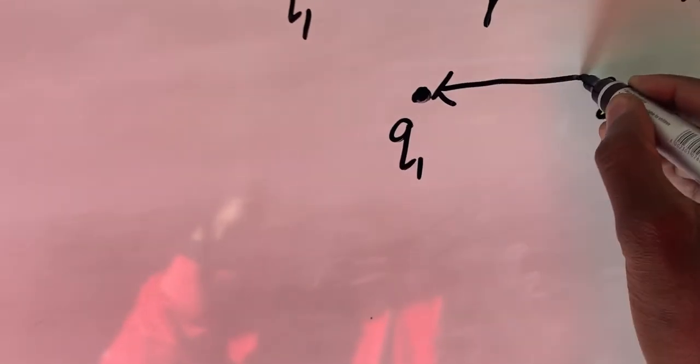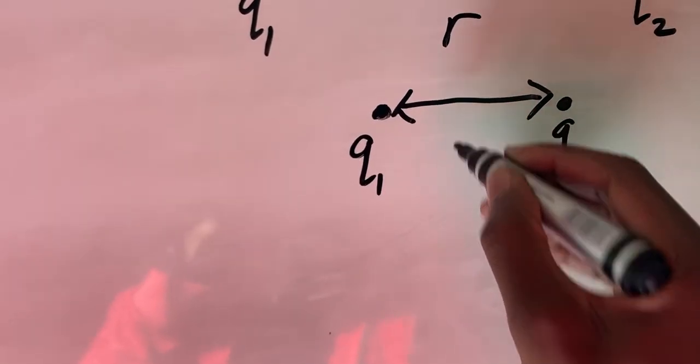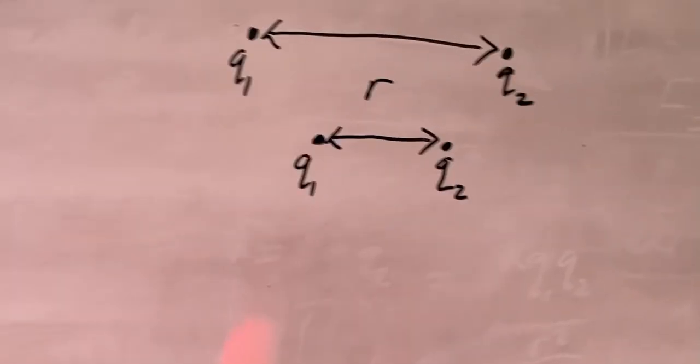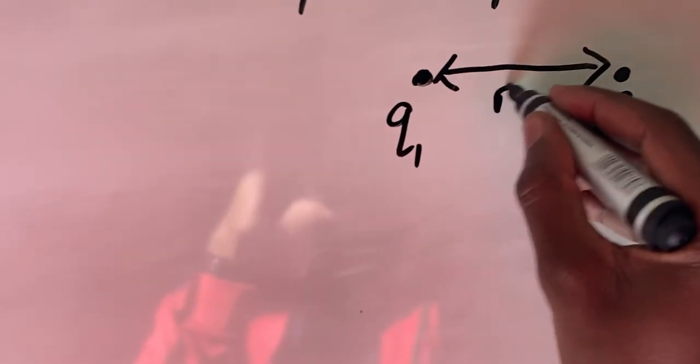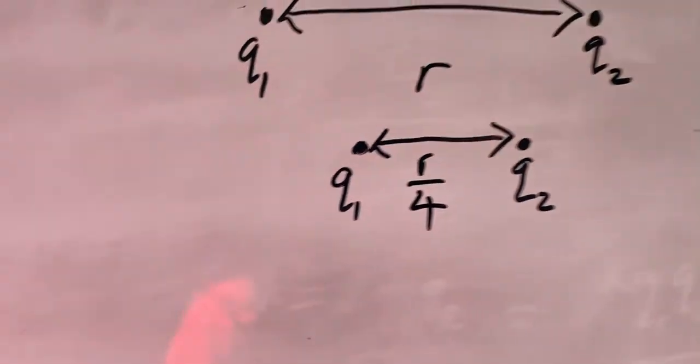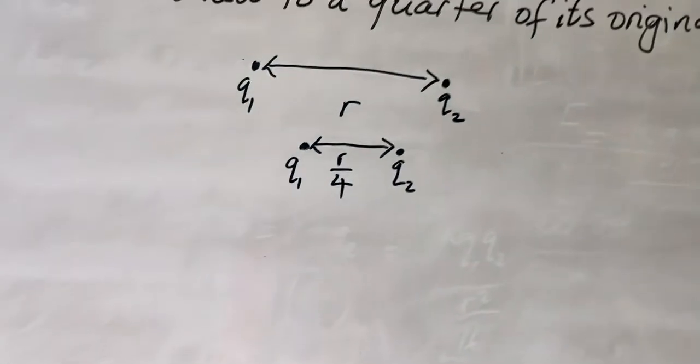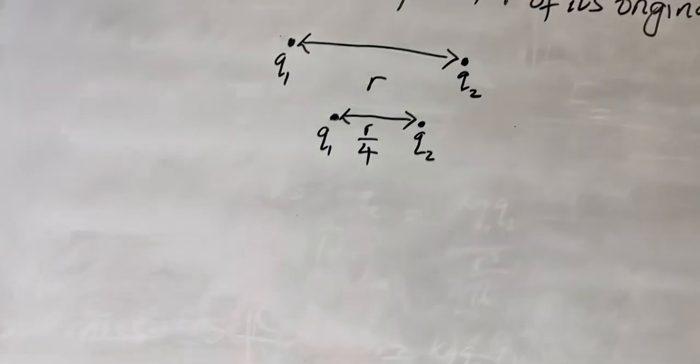So if we reduce the distance, we expect probably to have q1 here and q2 here. So our q1 will be here and our q2 will be here, and then we would have reduced the distance. They're saying the distance is going to be reduced by a quarter, so the new distance between them will be r over 4. That's what is going to be our new distance. We want to find out what's going to happen.